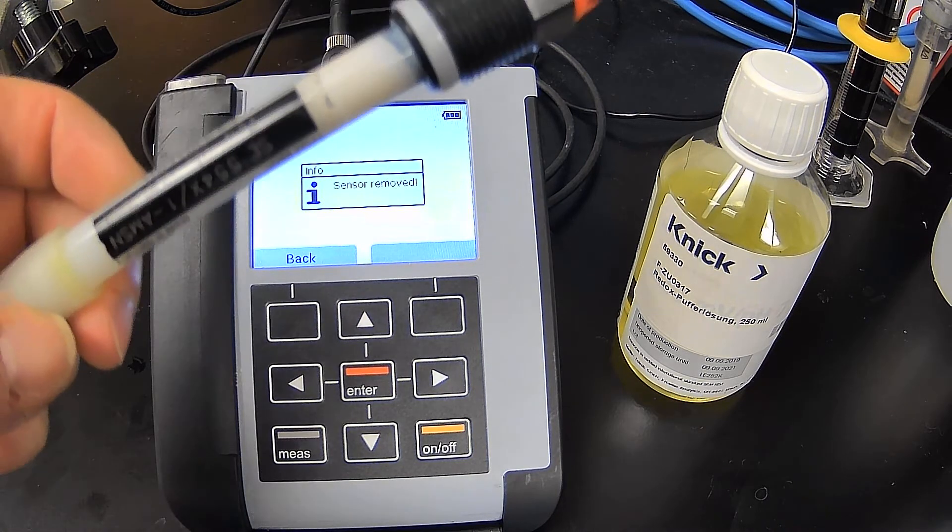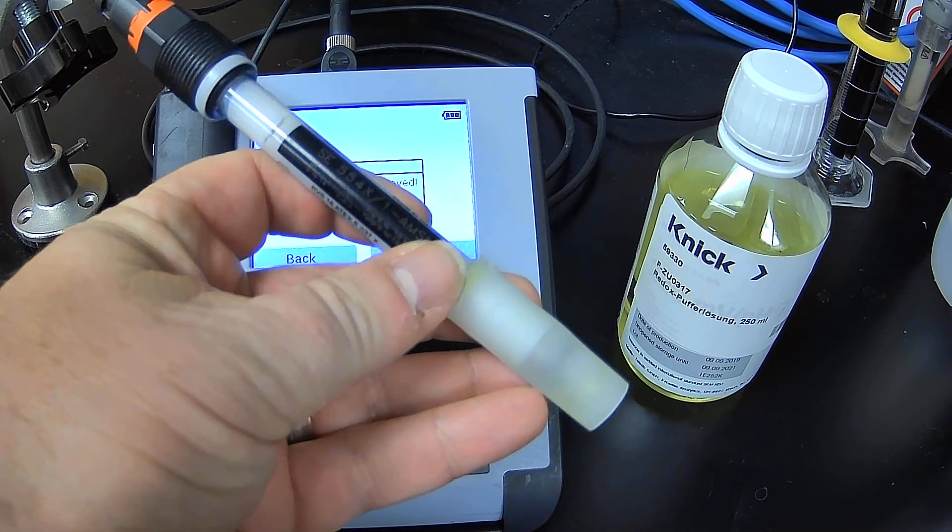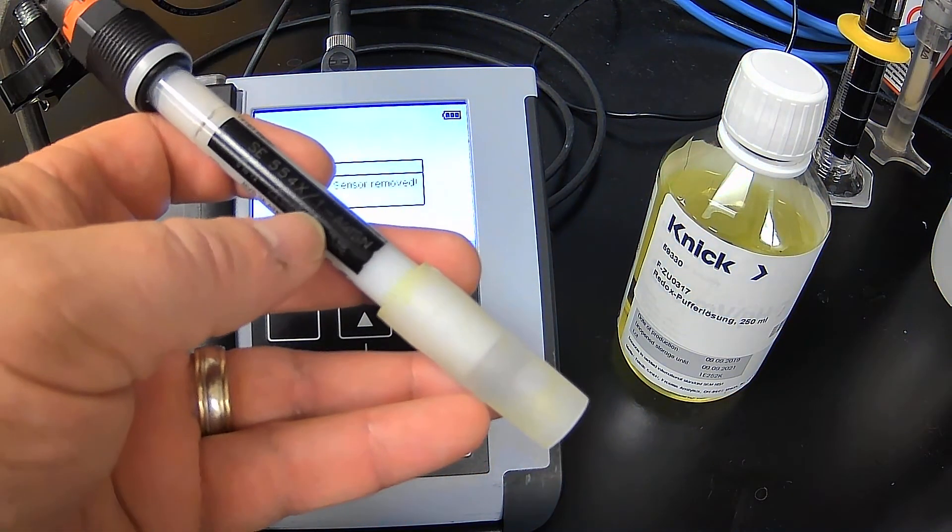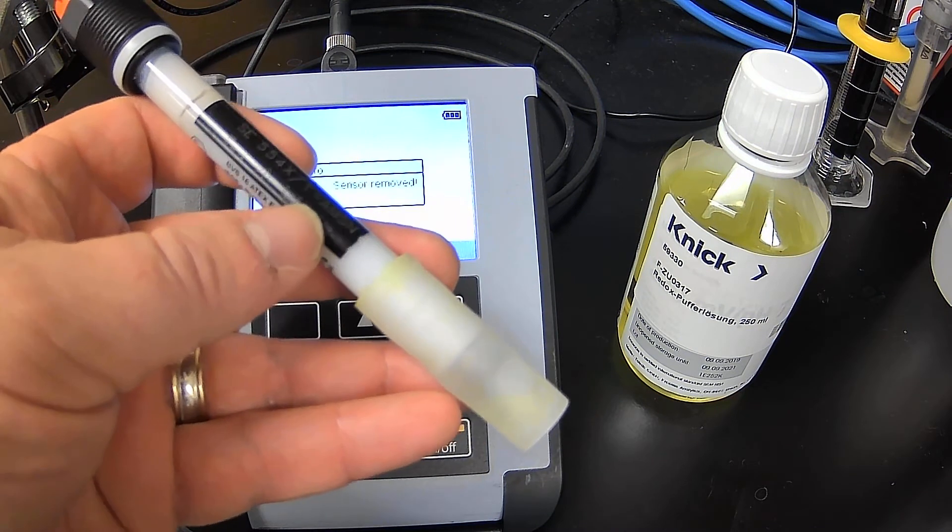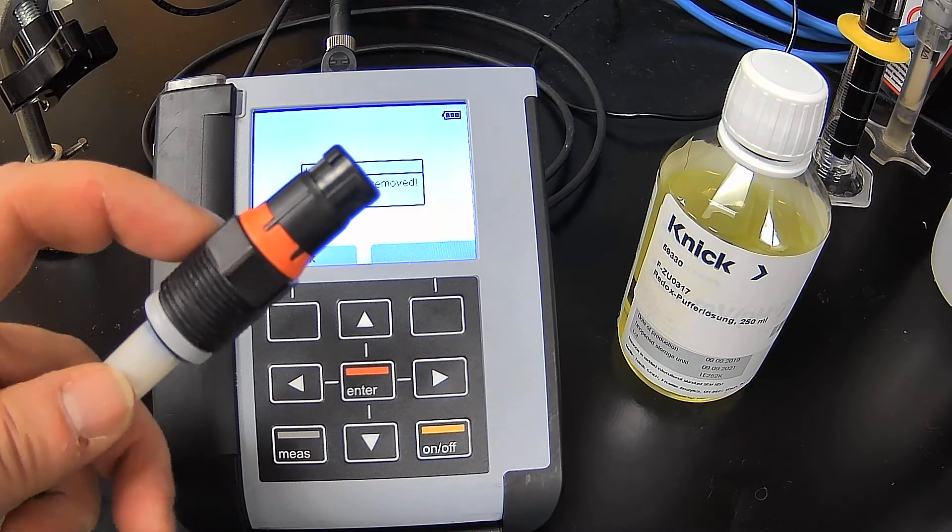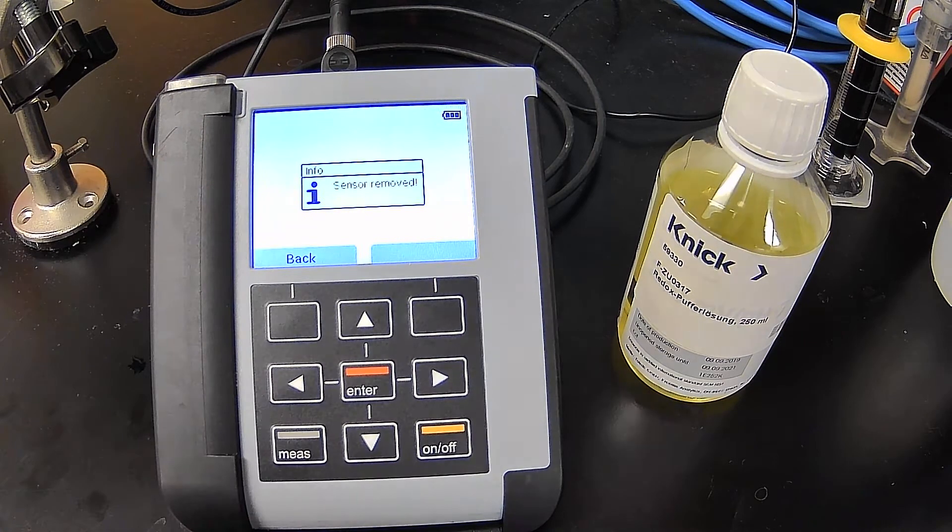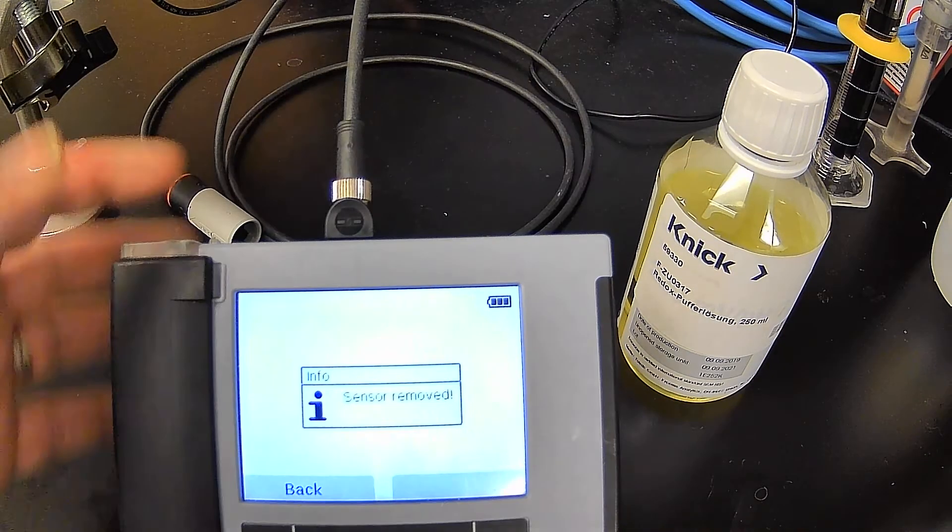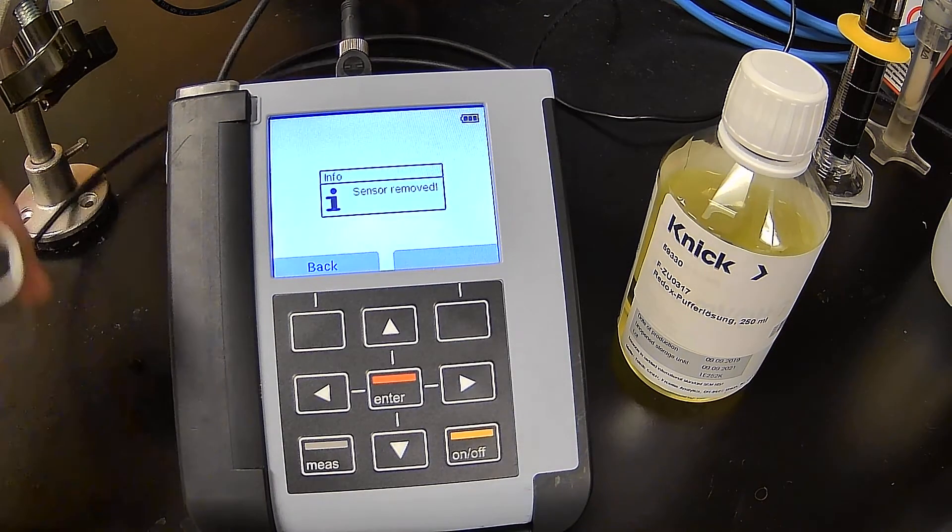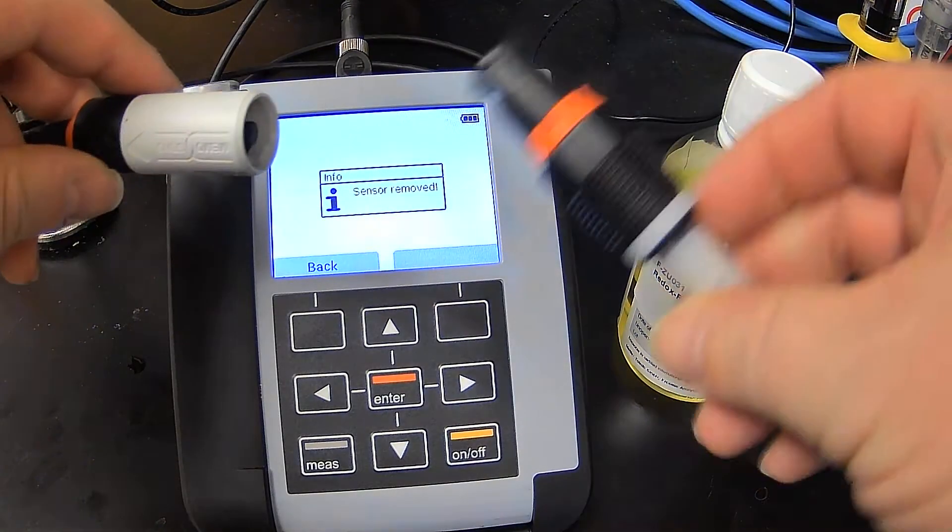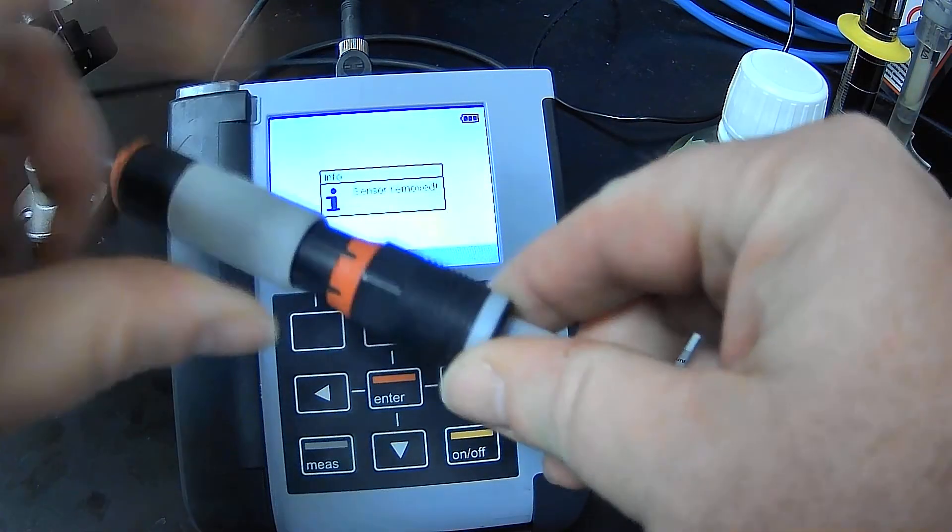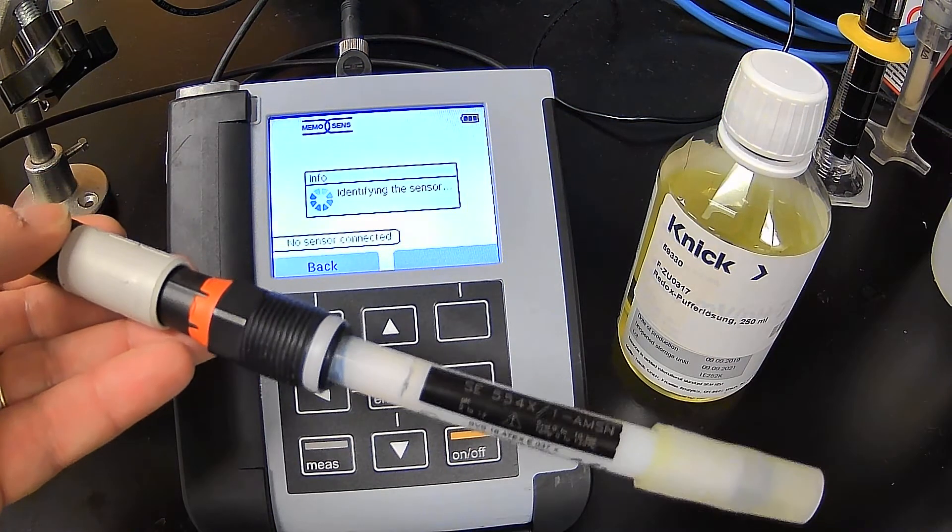The electrode that we're going to use is actually an SE554 AMSN combination electrode, which is pH and ORP. It is a Memosense, and as you can see here, we have the cable plugged into the top, and then we have the other end of the cable right here, which connects onto the electrode, the SE554 combination.